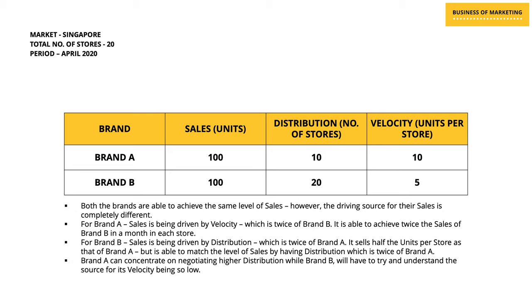However, when it comes to distribution, brand A has a distribution of 10 stores while brand B has a distribution of 20 stores. And when it comes to velocity, brand A has a velocity of 10 units per store and brand B has a velocity of 5 units per store.